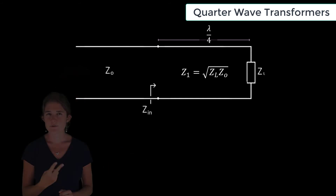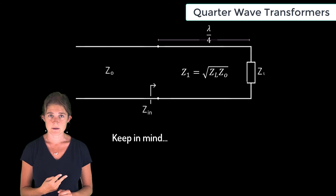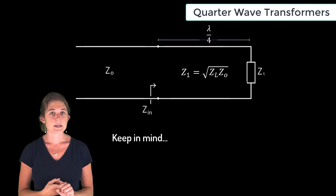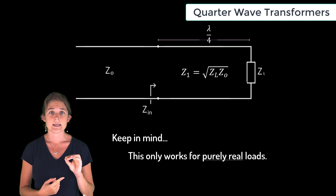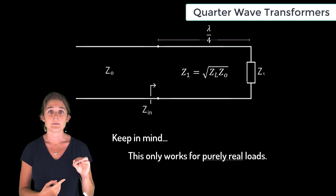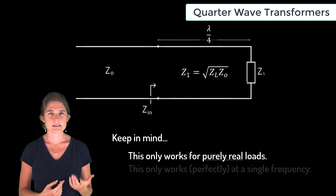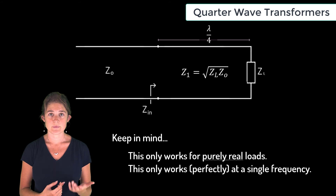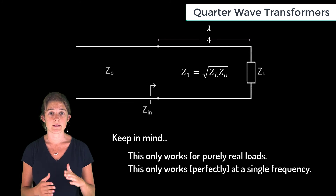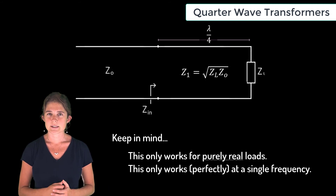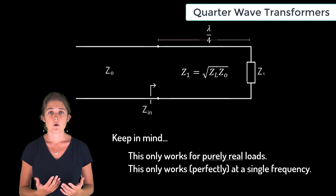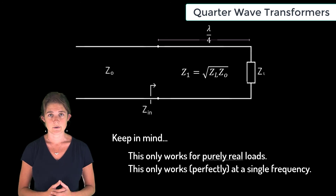There are two things you need to keep in mind when using this method. Firstly, in order for Z1 to be achievable, ZL has to be purely real. Secondly, this design works at a single frequency — the frequency where the length of the line is equal to lambda over four. This design would be inappropriate for matching a broadband signal or a complex load.